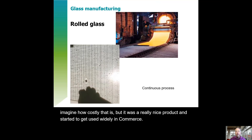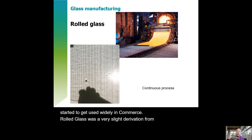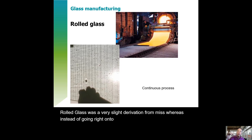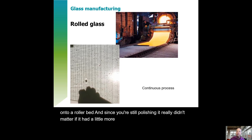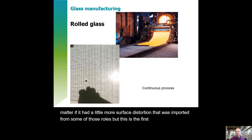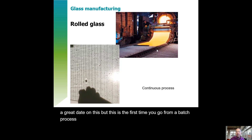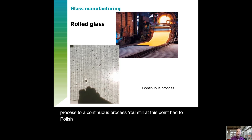Polishing initially took about eight hours per piece — four hours on each side — taking it from a half inch to a quarter inch thick. It was really expensive. Rolled glass was a slight derivation: instead of going onto a plate of steel, it goes directly onto a roller bed. Since you're still polishing it, a little surface distortion didn't matter. This is the first time you go from a batch process to a continuous process, though you still had to polish in stages. But now you're starting to churn out that glass, which helped bring costs down.